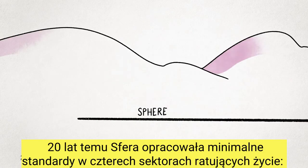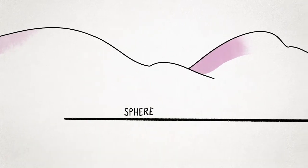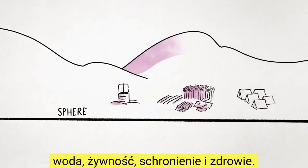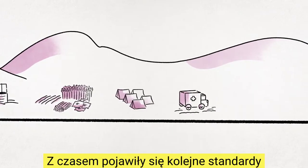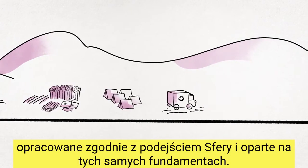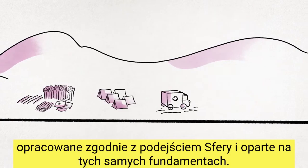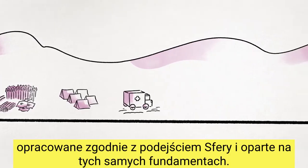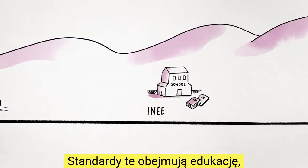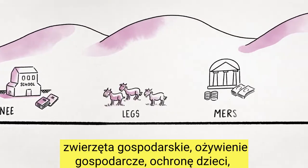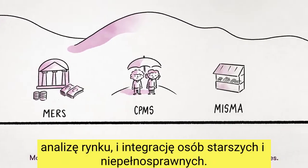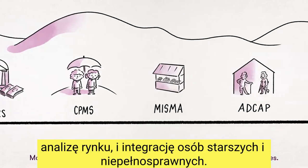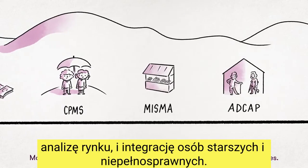Twenty years ago, Sphere developed minimum standards in four life-saving sectors: water, food, shelter, and health. Over time, more standards have been developed following Sphere's approach and built on the same foundations. These standards cover education, livestock, economic recovery, child protection, market analysis, and inclusion of older people and people with disabilities.